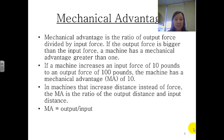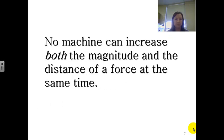In machines that increase the distance instead of a force, the mechanical advantage is the ratio of the output distance and the input distance. We would typically take the output divided by the input. This is another formula you need to know, so write that down. No machine can increase both the magnitude and the distance of a force at the same time.